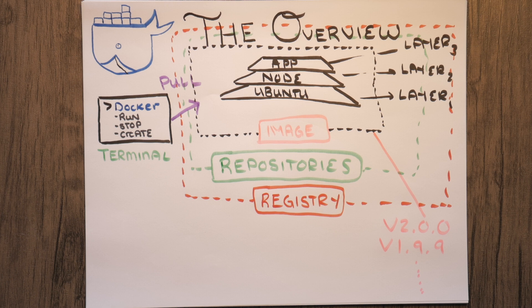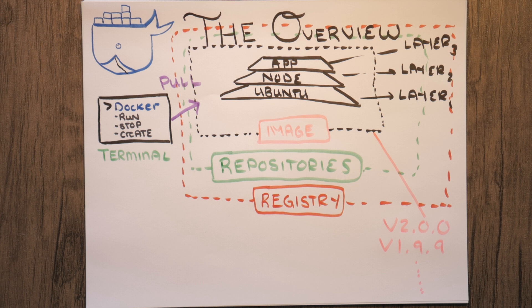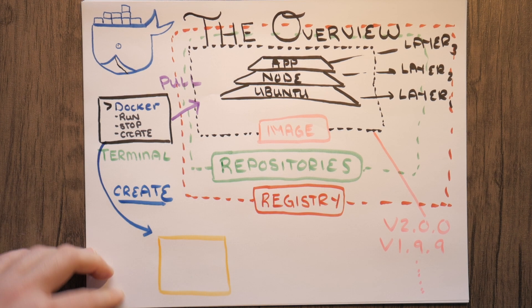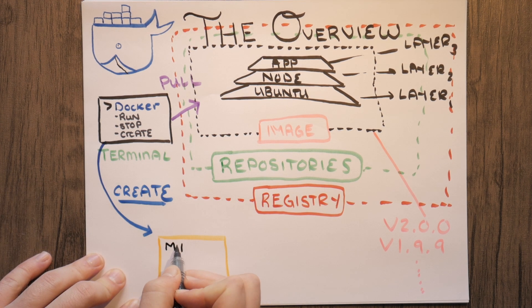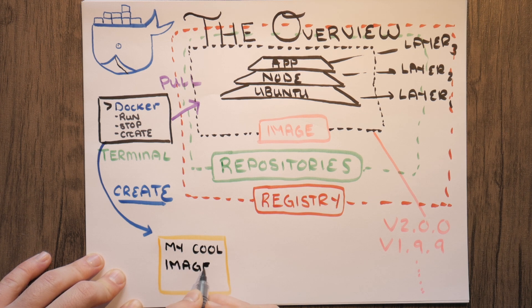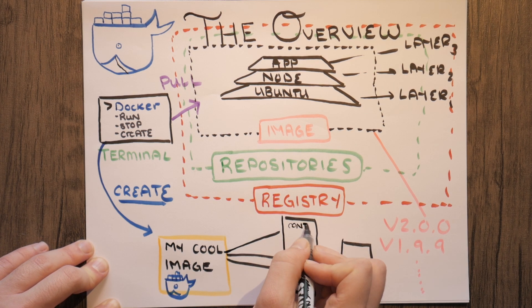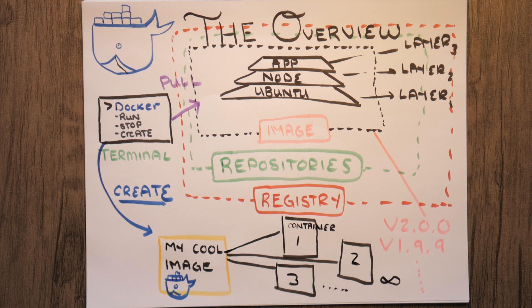Once we have the image on our host machine, we can spawn a bunch of running instances of the image known as containers across different systems and servers all over the globe as many times as we want. This automates the configuration and deployment of a given application very, very easily.